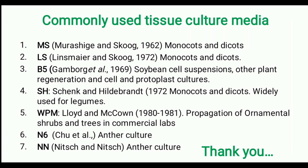Now we will see the commonly used tissue culture media. The MS medium, known as Murashige and Skoog medium, was discovered in 1962 and is widely used for monocots and dicots. Linsmaier and Skoog medium was discovered in 1972 and is also used for monocots and dicots. B5, otherwise known as Gamborg medium, was discovered in 1969 and is used for soybean cell suspension culture, hydroponics, and certain protoplast cell cultures. SH medium (Schenk and Hildebrandt, 1972) is used for monocots and dicots and mostly for legume plants. WPM, developed by Lloyd and McCown in 1980, is used for propagation of ornamental shrubs, trees, and commercial crops. N6 and NN mediums are widely used for anther culture techniques.